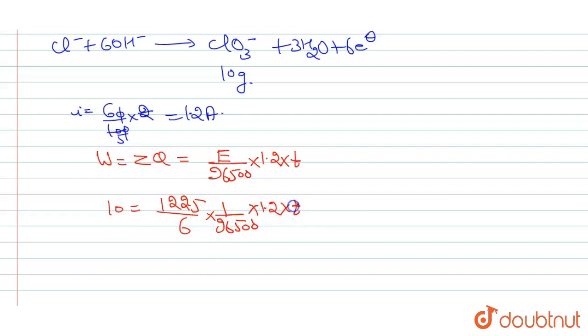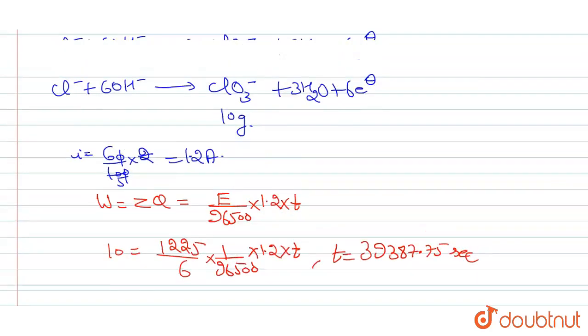Now what will be the time? We are calculating the time. What will be: 96500 into 6 divided by 122.5 divided by 1.2, that will be equals to 39387.75 seconds. This is the time required.